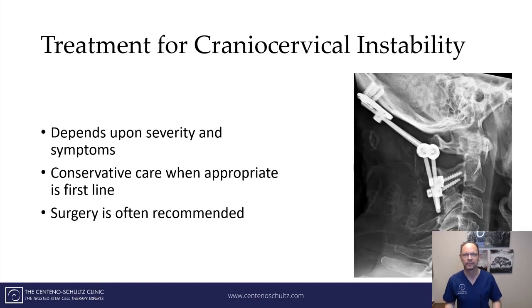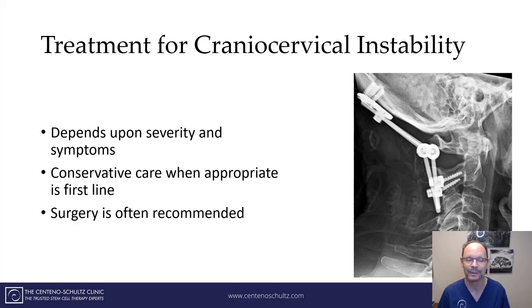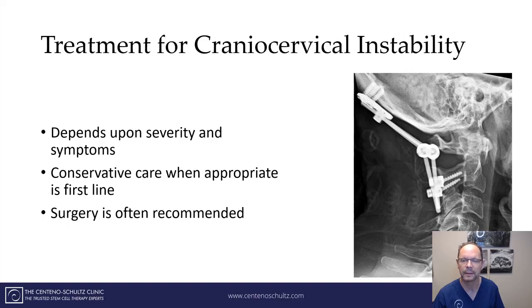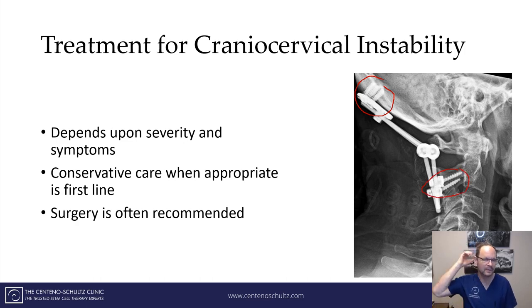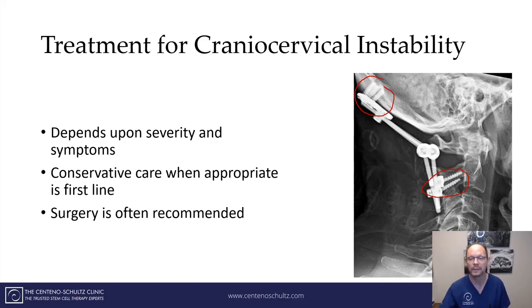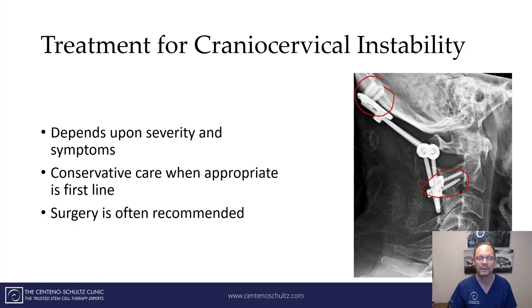What's the treatment for cranial cervical instability? It depends on the severity of the instability and symptoms. When appropriate, conservative care is always first-line therapy. But all too often, patients end up with surgical repair — basically a bolt joint in the back of your head connected to your cervical spine. This is called a cranial cervical fusion. It's a game changer, but also associated with significant immediate and long-term risks, including breakdown called adjacent segment disease below the level of fusion.